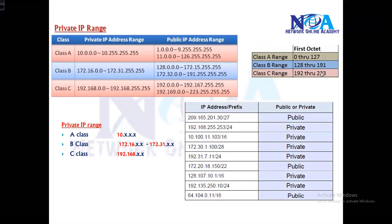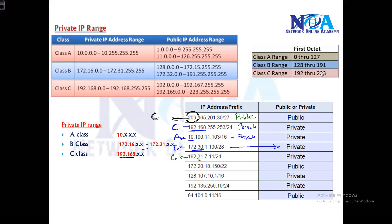Let's look at some examples to identify whether addresses are private or public. Take 209.x.x.x — it's in the Class C range, but in Class C only 192.168 is private, so 209 is a public address. Next, 192.168.x.x is a Class C address and starts with 192.168, so this is a private IP address. An address starting with 10 is Class A and is private. In Class B, 172.30 falls between 172.16 and 172.31, so it is a private address.